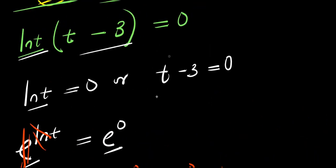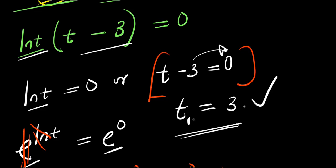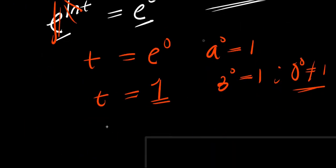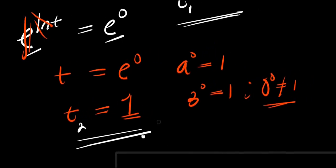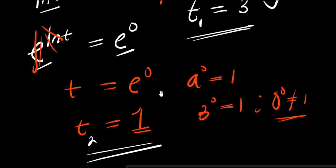We also have another equation right here, which is t minus 3 equals 0. To solve for t, I simply move the negative 3 over here — it becomes positive 3. So this is t1, like what we had earlier when we used our identity. And let this be our t2. Using this particular method, we have gotten two different values for t, which are 3 and 1.